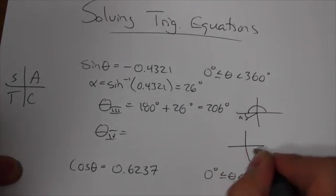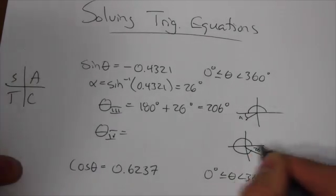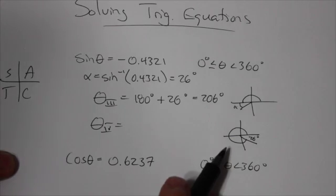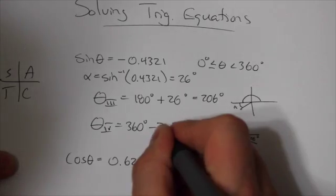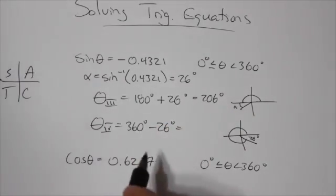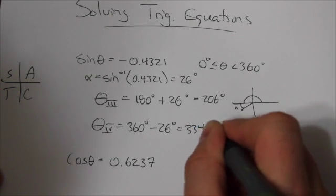In the fourth quadrant, my reference angle is right here, 26 degrees, so I come all the way around to that point right there. So that is going to end up being 360 degrees minus 26 degrees, and that is going to end up being 334 degrees.